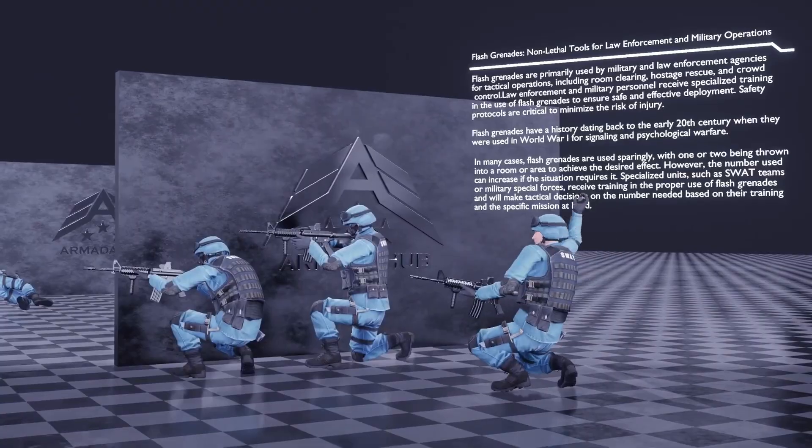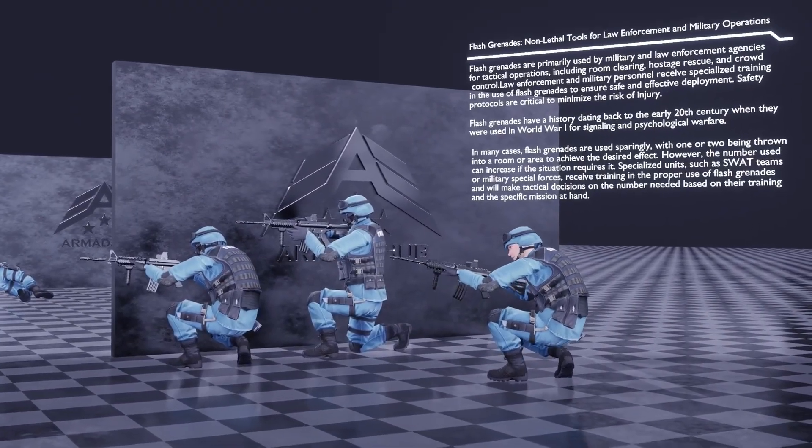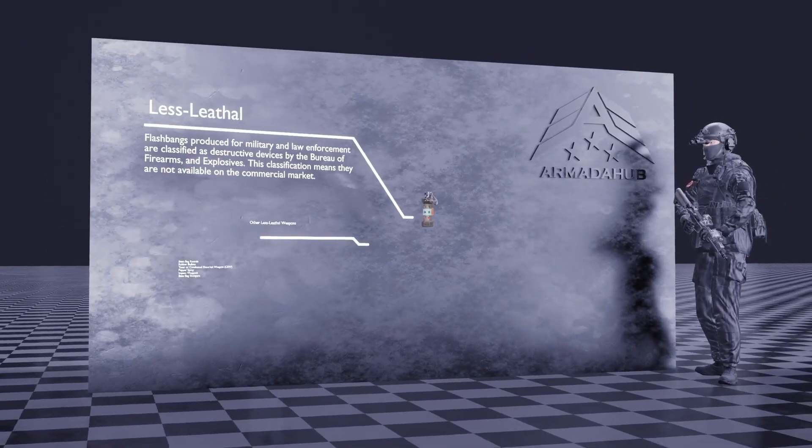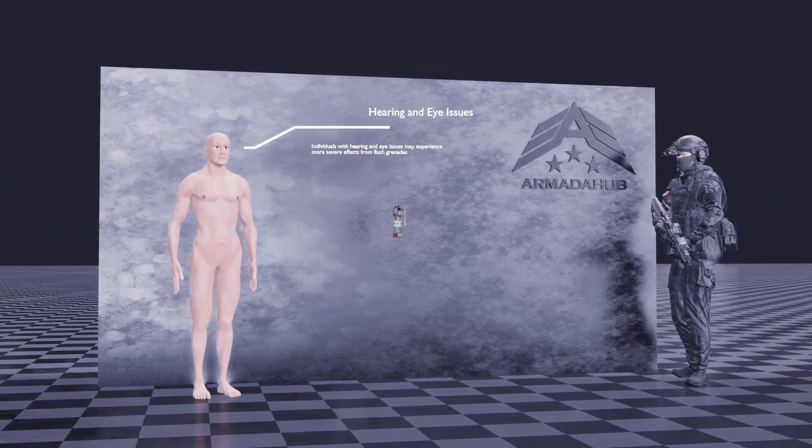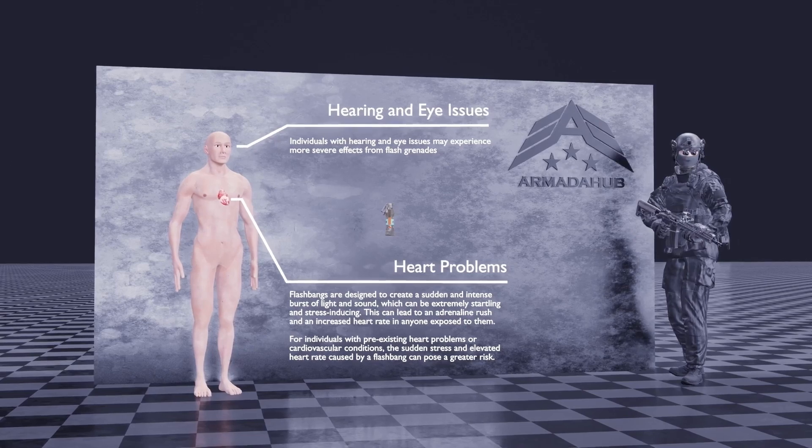The primer ignites, creating a spark that activates the first fire mixture. This in turn ignites the delay element, which burns for approximately 1.5 seconds.